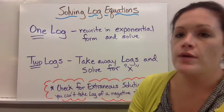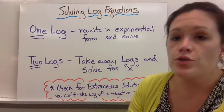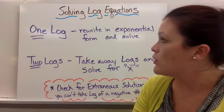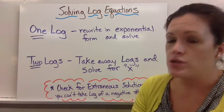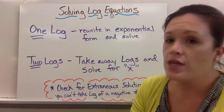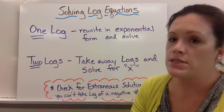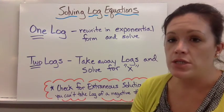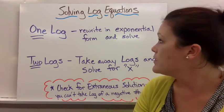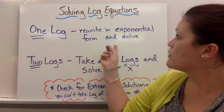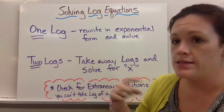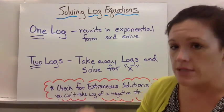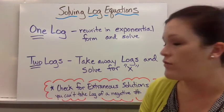Let's work on solving log equations. There are two main types of log equations you'll see. Some of them have one log, and some of them have two logs. One log means you can condense everything, but there's still one log on one side of your equal sign. Two logs means one is on each side and you can just take them away. When you have one log, you have to rewrite it in exponential form and then solve it from there. For two logs you can just take them away and solve what's left.